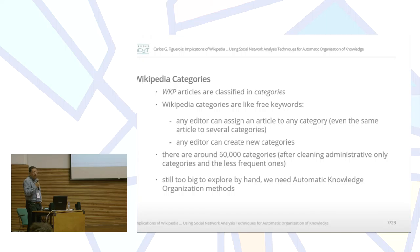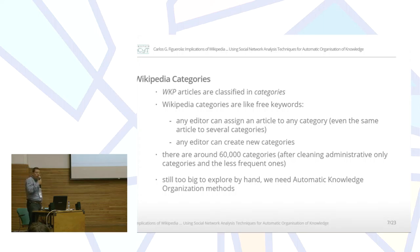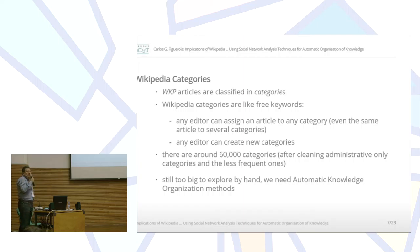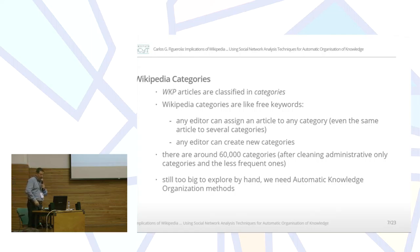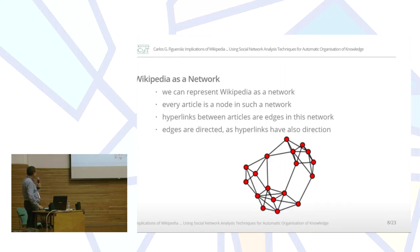Articles in Wikipedia are classified in categories. But categories in Wikipedia are like free keywords. One author or one editor of one article can classify this article in any category, even in several categories, and also any editor can create new categories on the fly. So we have in this version of Wikipedia around 60,000 categories, and this is still too much to drill by hand.